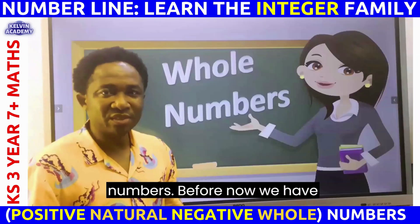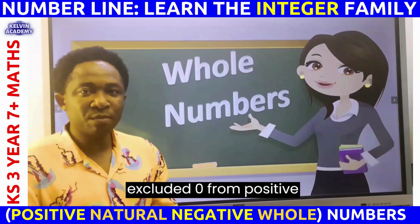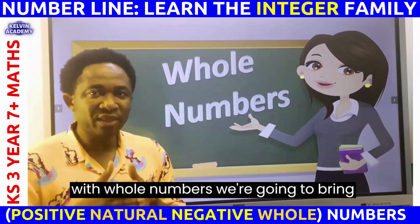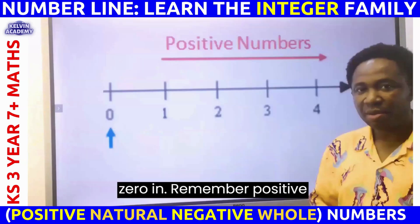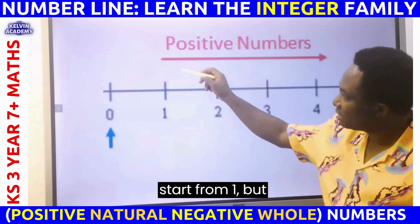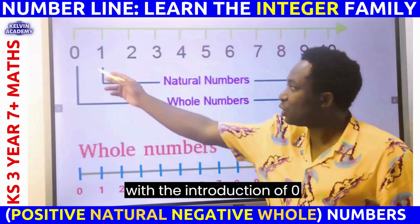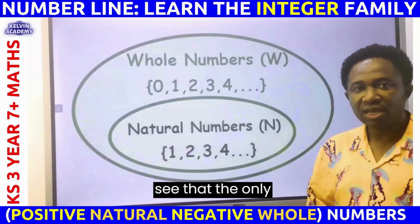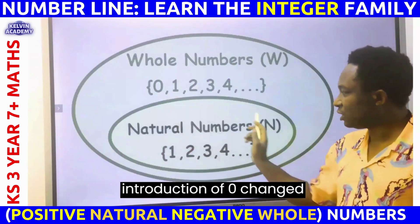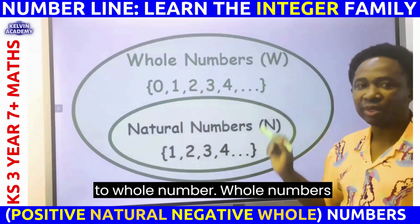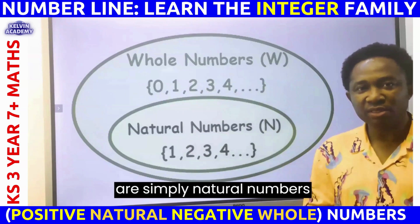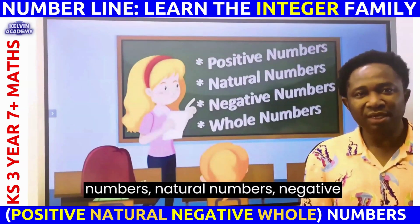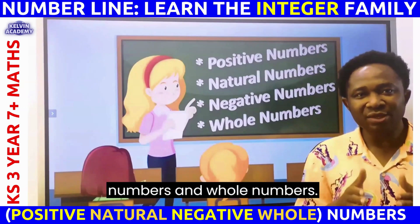Next, let's consider whole numbers. Before now, we excluded zero from positive numbers, natural numbers, and negative numbers. But with whole numbers, we bring zero in. Remember, positive numbers and natural numbers start from one. With the introduction of zero into this family, the name becomes whole numbers. The only introduction of zero changed the name from natural number to whole number. Whole numbers are simply natural numbers with the inclusion of zero.